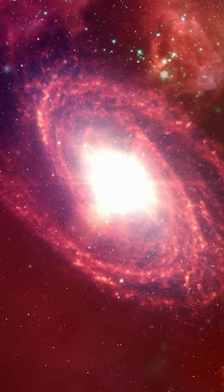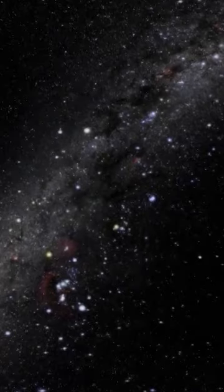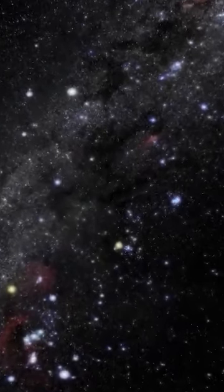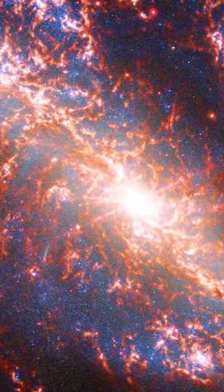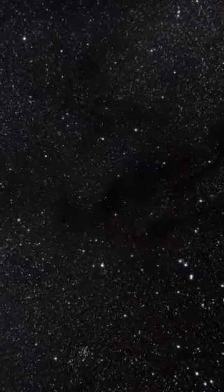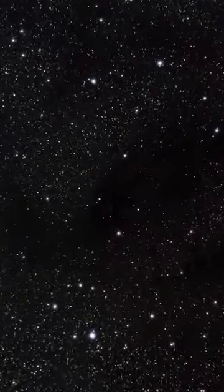The hourglass-shaped dark cloud L1527 conceals the protostar with its neck. Each side of the hourglass is made up of blue and orange clouds which are formed when material ejected from the protostar collides with other matter.